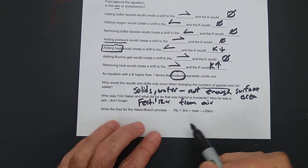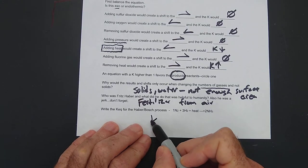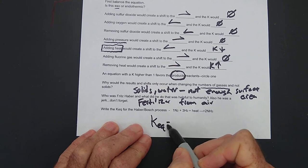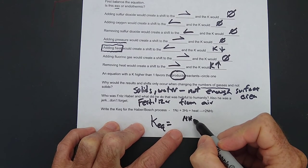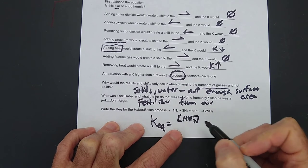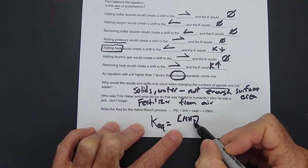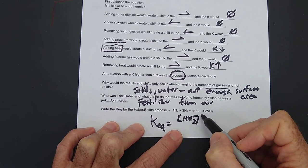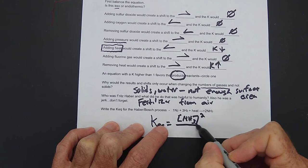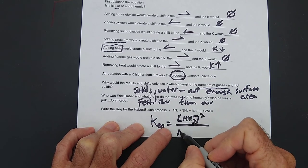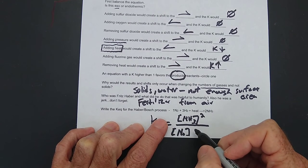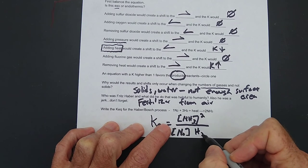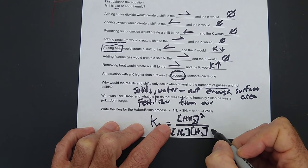Write the K-EQ for the Haber-Bosch process. So here it is. If you're going to write the K for this equation, you put the products on top, raised to the power of their molarity. So NH3, and there's a 2 there, so to the second, over N2, and that would just be the first, so you don't have to write anything, times H2 to the third.